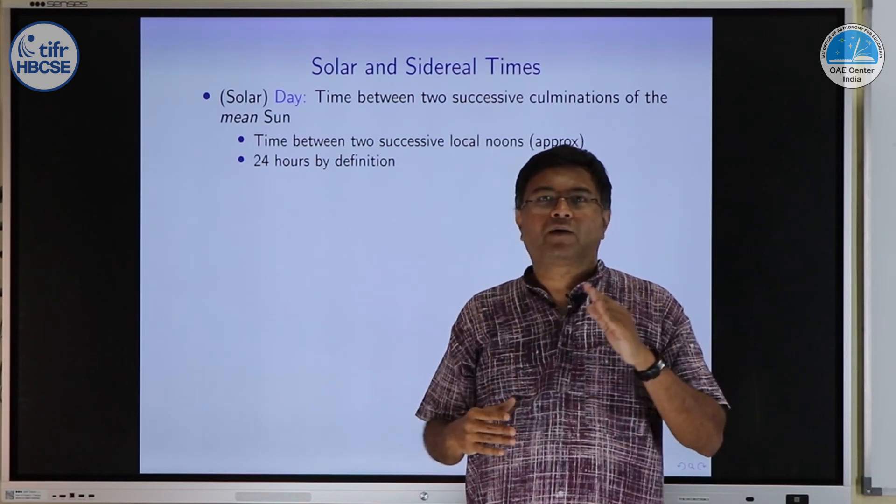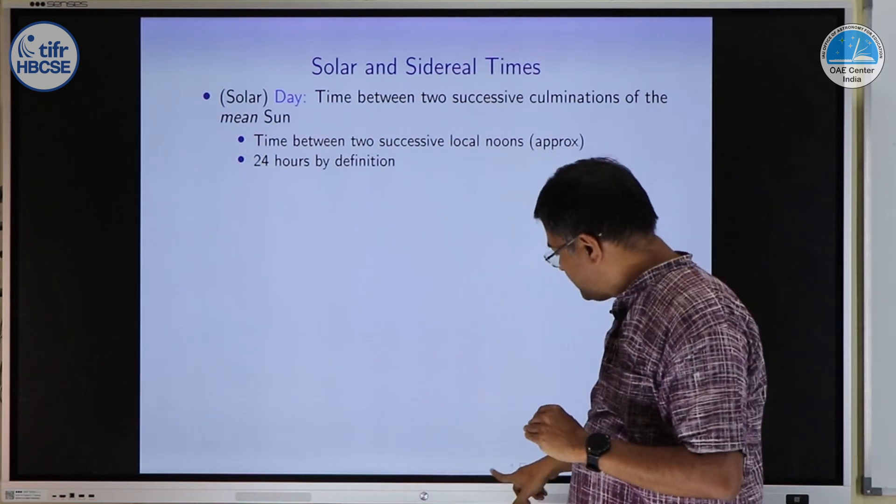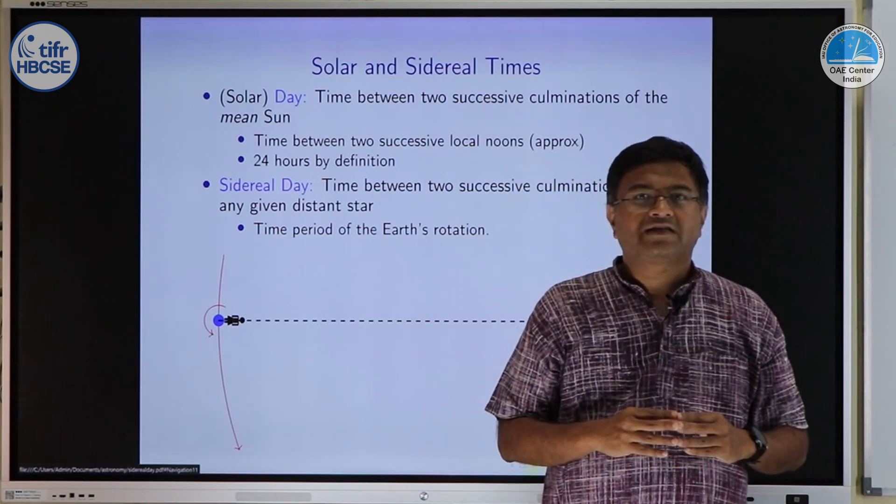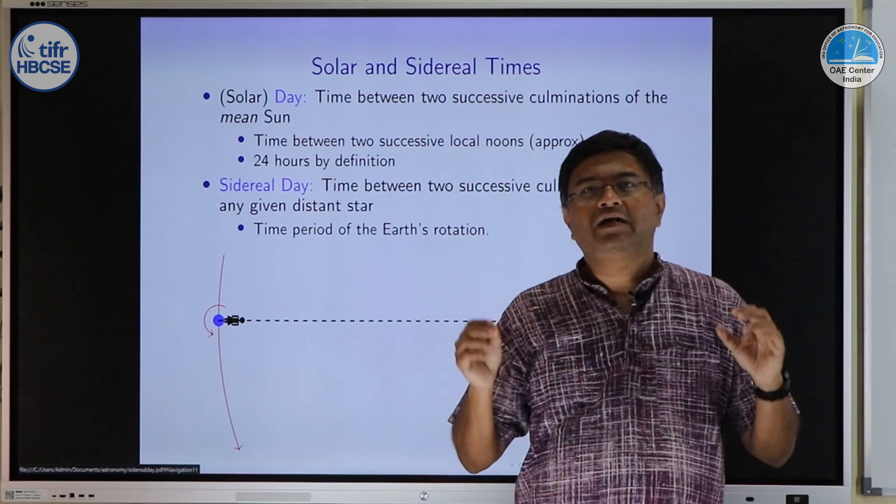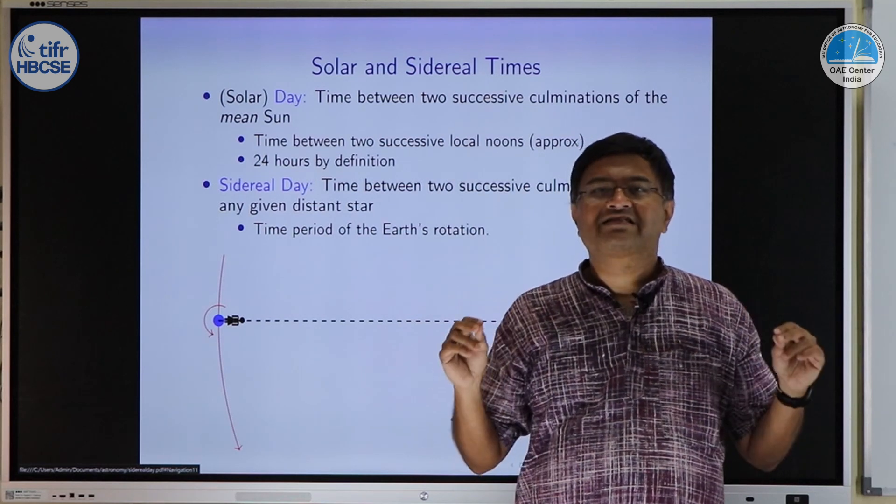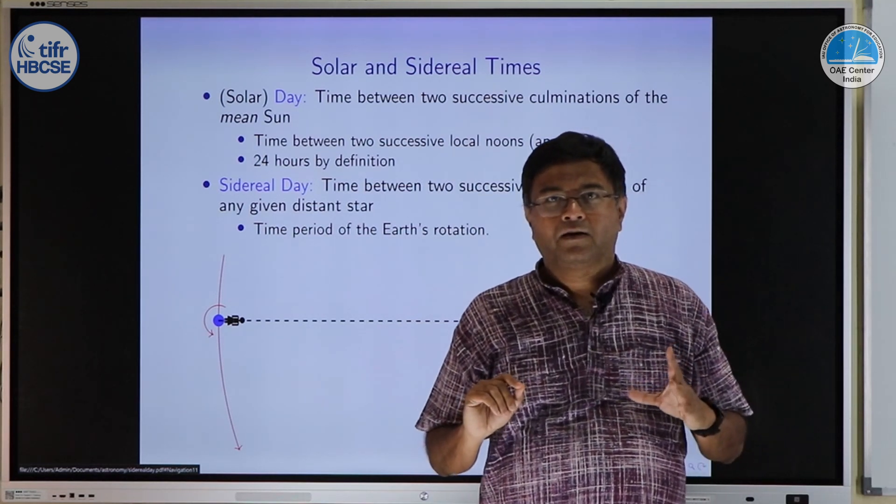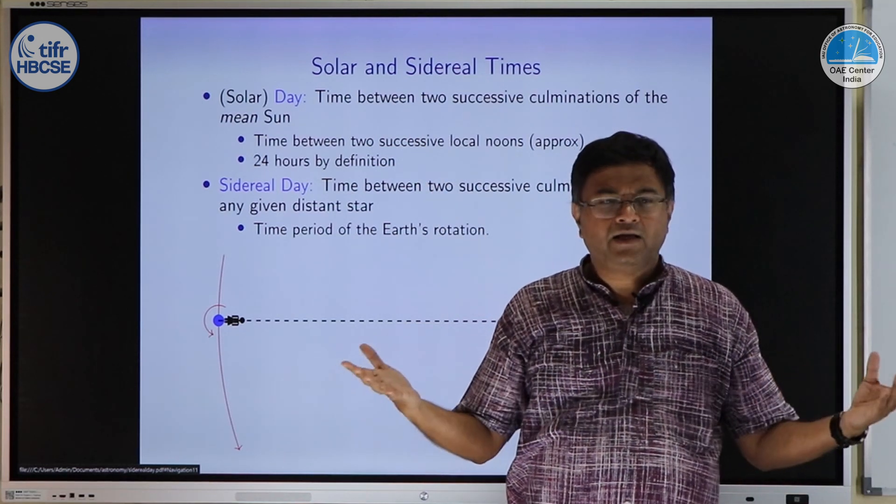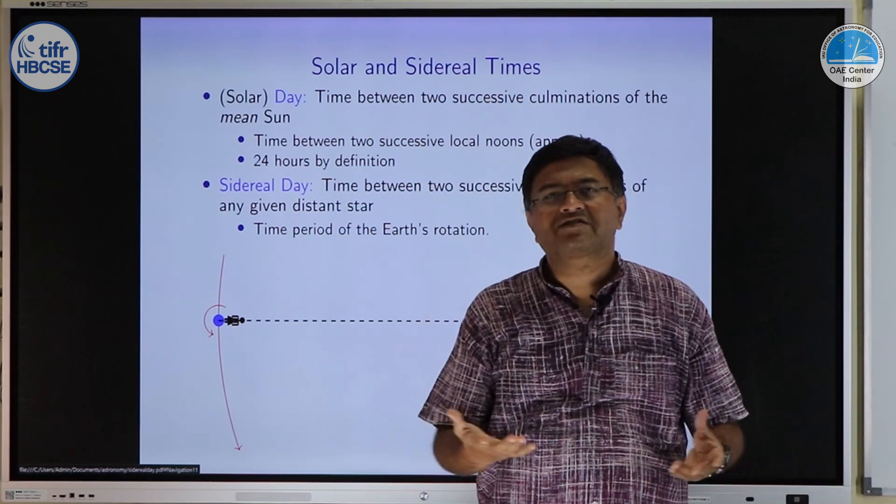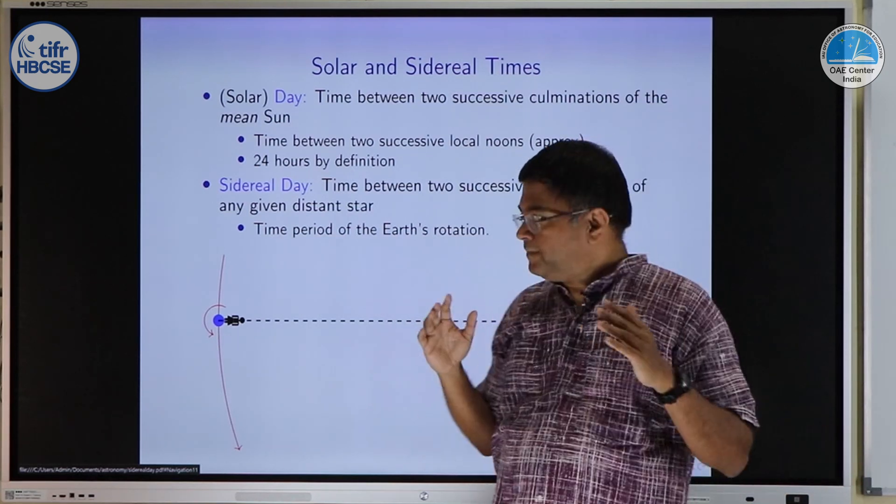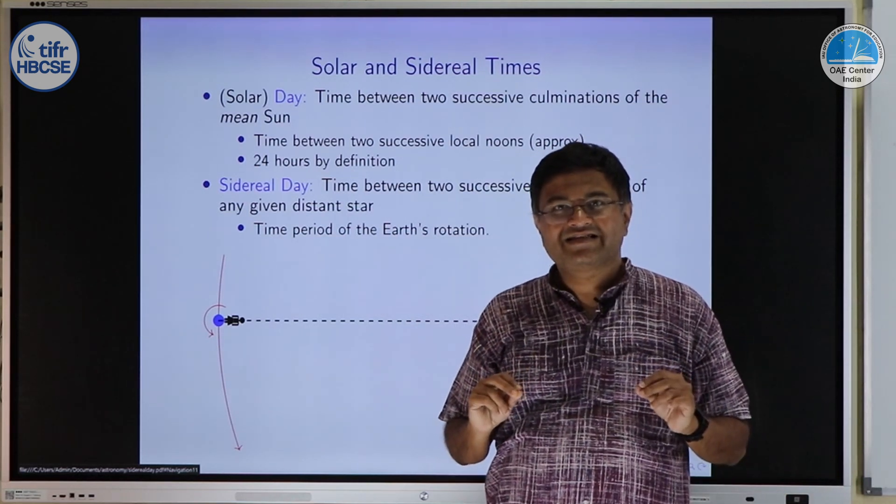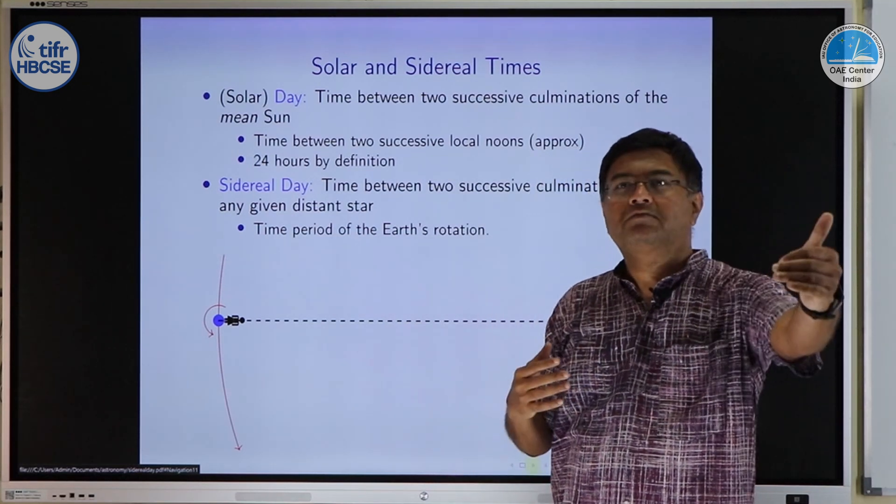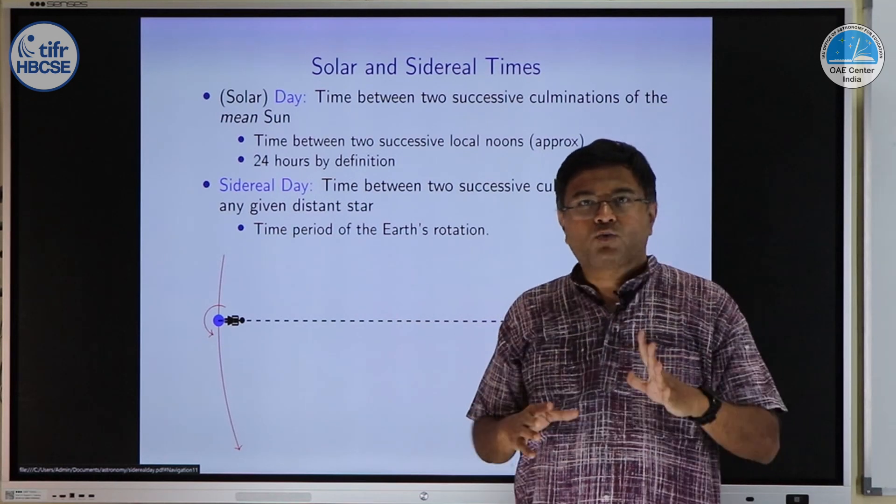But there is another way of defining the day, what we call as the sidereal day. Sidereal day is time between two successive culminations of any distant star. First definition we had time between two successive culminations of sun. Second day time between two successive culminations of star. They look very similar. So what has changed? The fact which has changed is stars are very very far and sun is not that far. It is far but not that far.